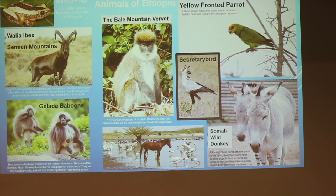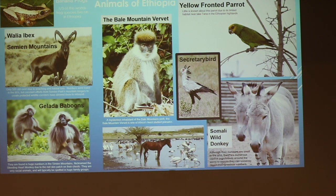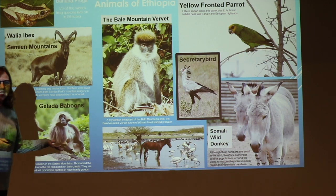Some of the indigenous animals — one third of the world's frog species live in Ethiopia. This is the Ibex, and here are some Gelada baboons. Here's our mountain vervet. Here's a beautiful yellow-fronted parrot. A secretary bird — look at that bird, there are lots of feathers on it. And then a Somali wild donkey. We saw that Somalia was near Ethiopia, so some animals are common between those countries. This is just a taste of some of the animals that are indigenous to Ethiopia.